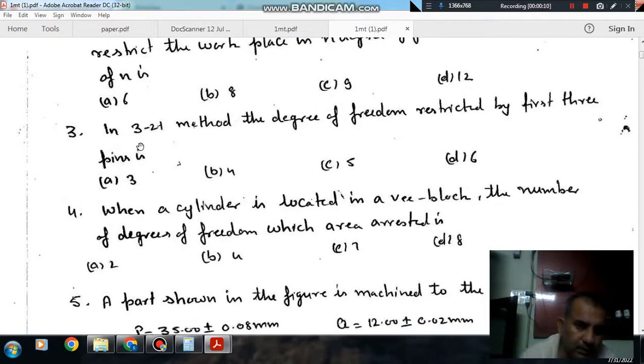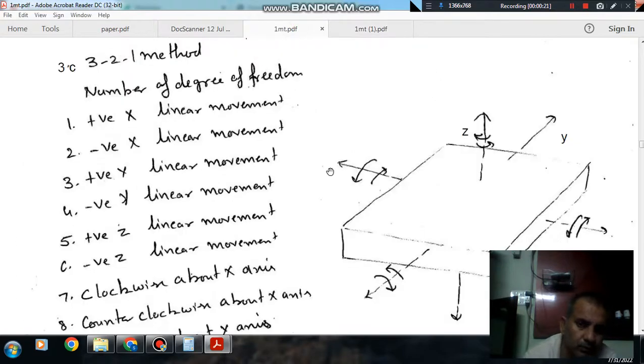Question number 3 is: in 3-2-1 method, the degree of freedom restricted by first 3 pins is option A 3, option B 4, option C 5, and option D 6.